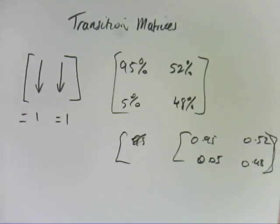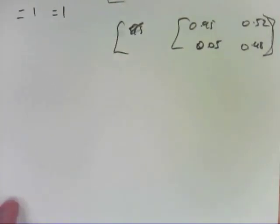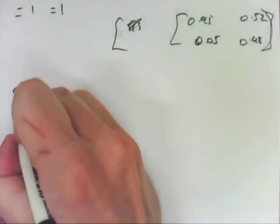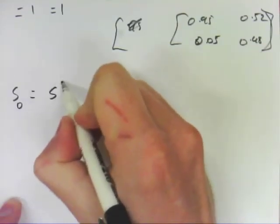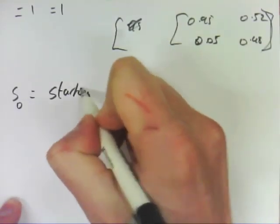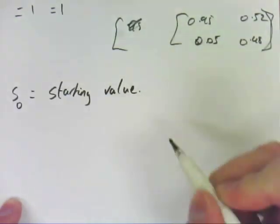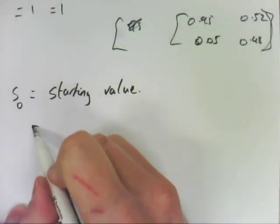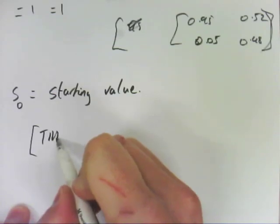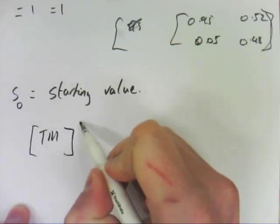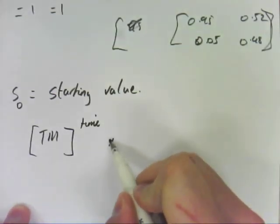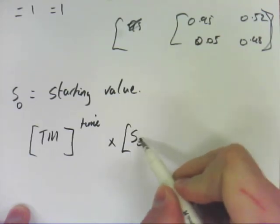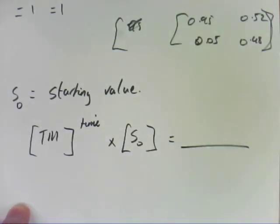So that's the transition matrix. Now when you come across a transition matrix problem, you'll be asked for the S0, which is your starting value basically. And then the formula you use is your transition matrix to the power of time multiplied by your S0, and that equals your long-term thing.